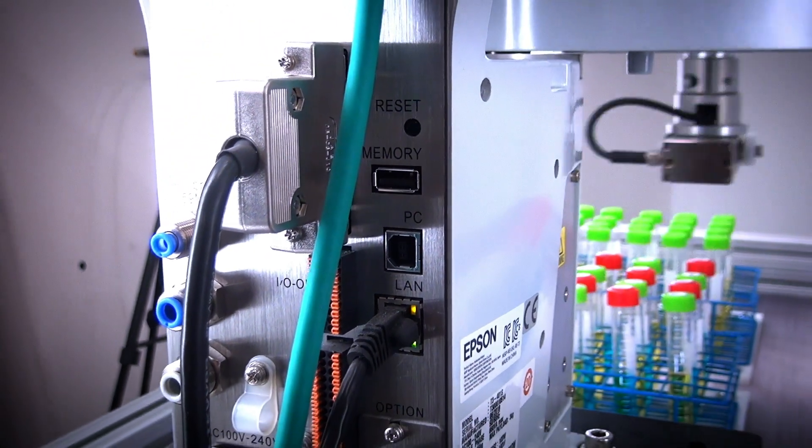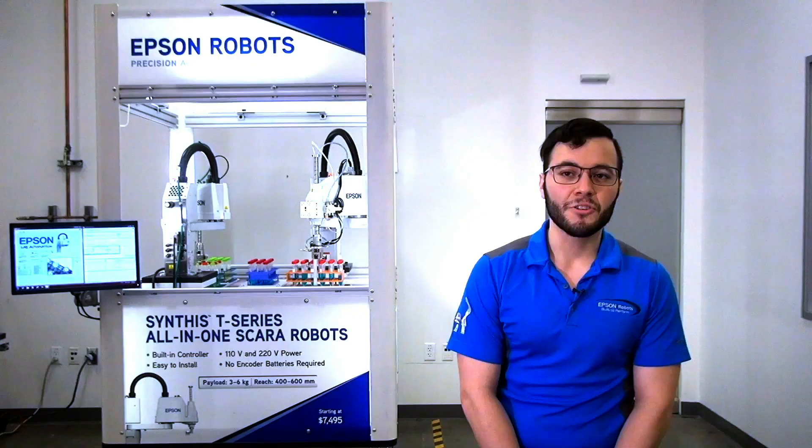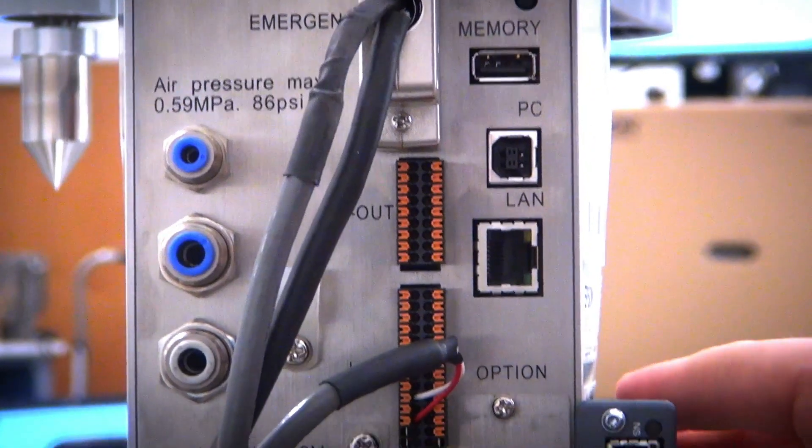You have a USB port for a thumb drive so that you can obtain a backup of your controller on the fly. You also get an additional USB type B port connector or an ethernet port connector to allow communication between the robot controller and the computer running Epson RC Plus software.